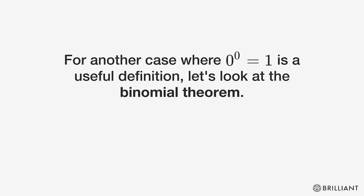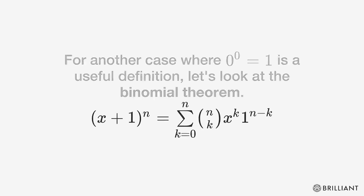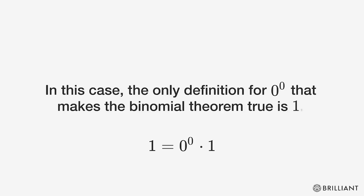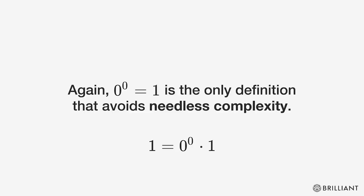For another case where one is a useful definition, let's look at the binomial theorem. When x equals zero, this simplifies to 1 equals 0 raised to the power of 0 times 1. In this case, the only definition that makes the binomial theorem true is 1. Again, 1 is the only definition that avoids needless complexity.